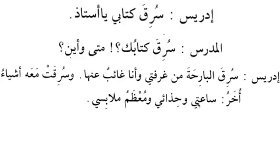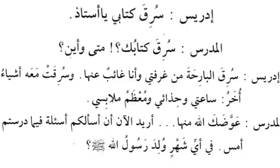Was suriqat ma'ahu ashya'un ukhra - other things were also stolen along with it. The fa'il changes according to the gender of the naib fail. Ashya'un is the naib fail - it comes from shay'un; ashya' is jama' taksir. And ukhra means other things. Along with the kitab: sa'ati - my watch, my shoes, and mu'azzamu malabisi - most of my clothes. Awwadakallahu minha - may Allah reunite you with them. This is a du'a.